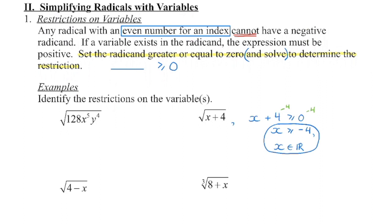You can try this out. If x equals negative 4 and we substitute it back in, negative 4 plus 4 is 0, and the square root of 0 is 0 — that's okay. Any number greater than negative 4 will also work. If you try a number that is not greater than negative 4, say negative 10: negative 10 plus 4 is negative 6, and I cannot take the square root of negative 6. Try it on your calculator and you're going to get an error message. So this expression is defined when the variable is greater than or equal to negative 4.